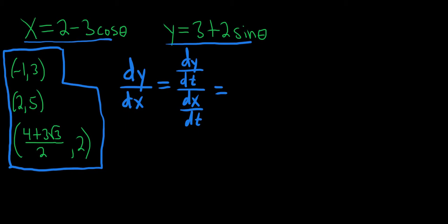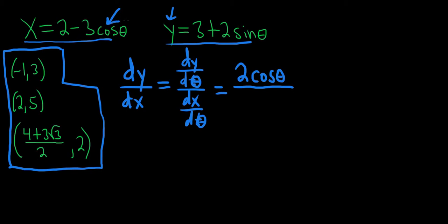Let's go ahead and compute it right now. So dy/dθ is going to be the derivative of y with respect to θ. The constant 3 goes away and the derivative of sine is cosine, so dy/dθ is 2cosθ. And dx/dθ — the derivative of cosine is negative sine, but there's already a negative here, so we get 3sinθ.